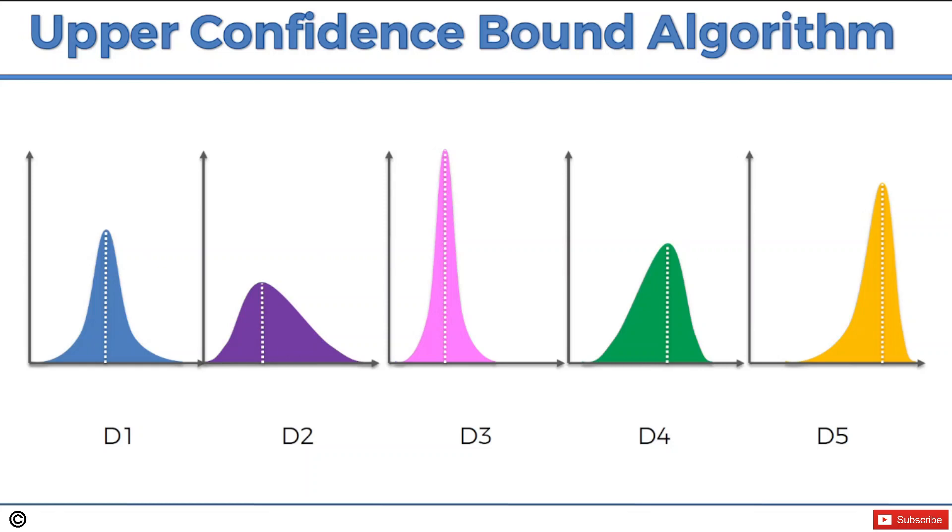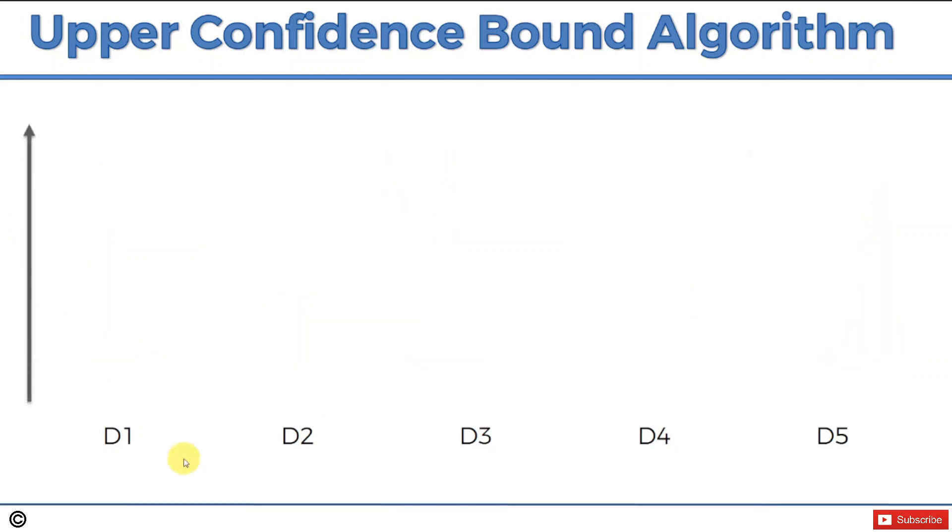Let's transfer these distributions or the actual expected return from these distributions onto a vertical axis. We're going to take these values and put them onto a vertical axis. For distribution one, the value is there. For distribution two, there was a value lower. Distribution three, even lower. Distribution four, higher. And distribution five, the best. Those are the expected values or returns for each of those machines. That's our y-axis. But again, we don't know that.